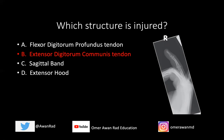The sagittal band and extensor hood are important for extension, but this is the wrong location. The sagittal band are fibers that help prevent lateral translation of the extensor tendons at the MCP joint, so that would be down here. The extensor hood are also fibers that prevent lateral translation, and they run just proximal to the MCP to just proximal to the PIP joint. The sagittal band is actually a part of the extensor hood, so we're in the wrong location there.